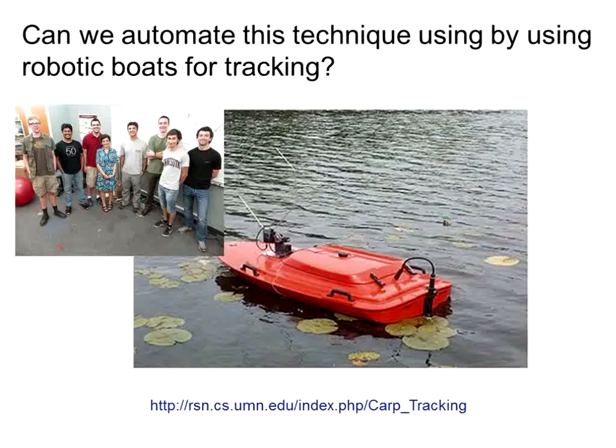The question then was whether we could automate this technique, because it's a lot of work following radio-tagged fish around. We've been collaborating with a computer science group at the University of Minnesota interested in search and rescue, and we've developed robotic boats. You see a little robotic boat with a radio antenna on the top that swivels. These boats can go out as teams, find the radio-tagged fish, and report back — it's quite effective. This means we don't have to employ students to go out and do it.